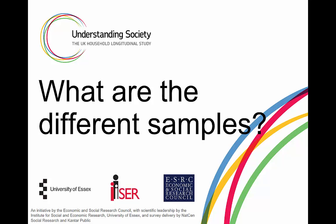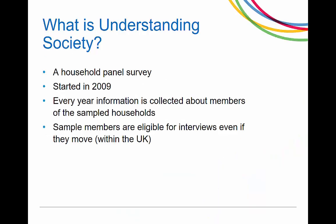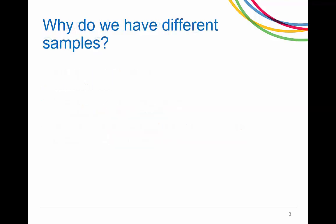In this video we will give an overview of the sample design for Understanding Society and how to account for it in analysis. Understanding Society is a household panel survey which started in 2009. Every year information is collected about members of the sampled households. Sampled members are still eligible for interviews even when they move. So why do we have different samples in the study? The answer is that this is a multi-purpose study and the aim was to allow a wide range of research using this data.